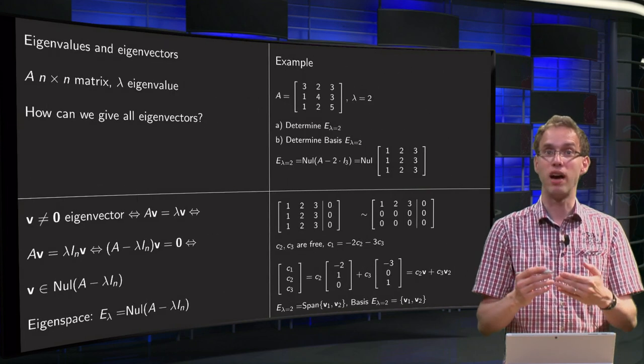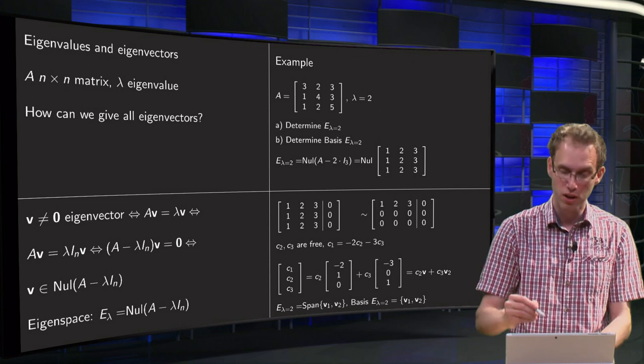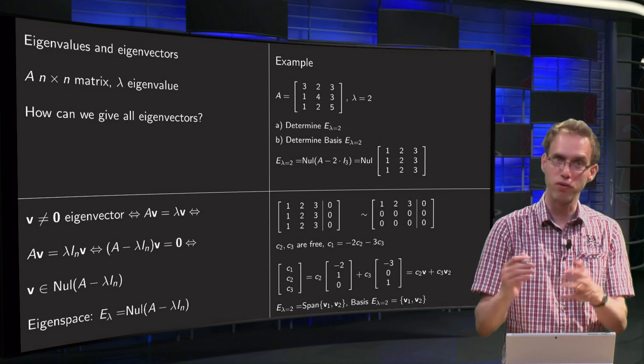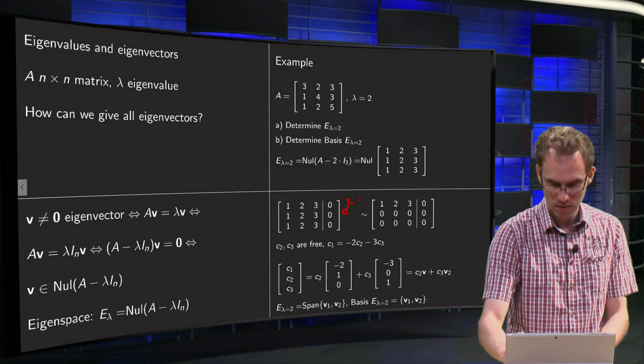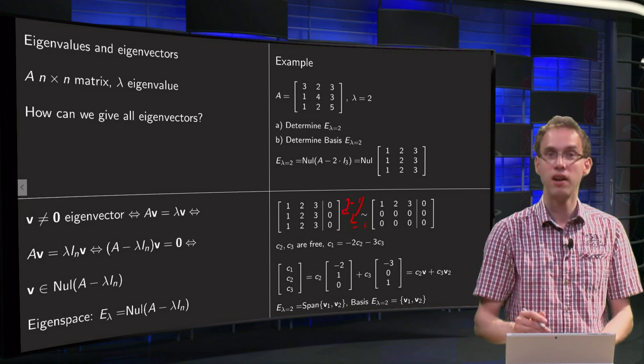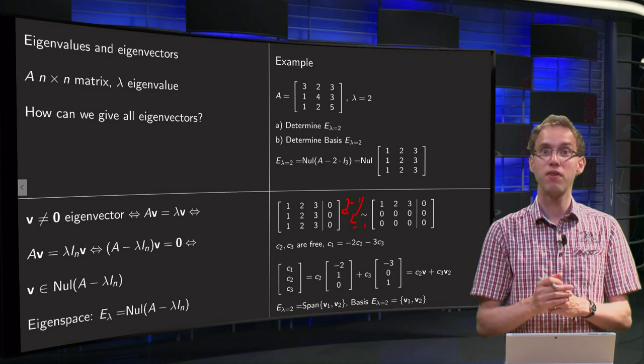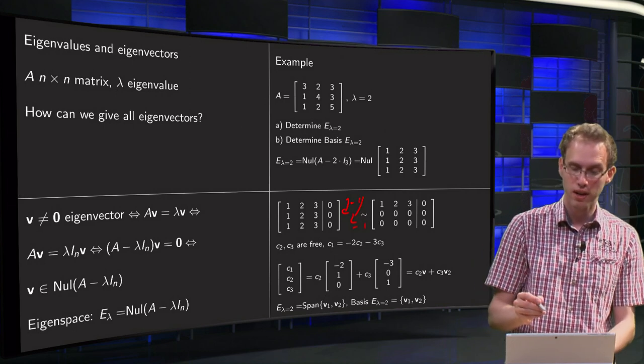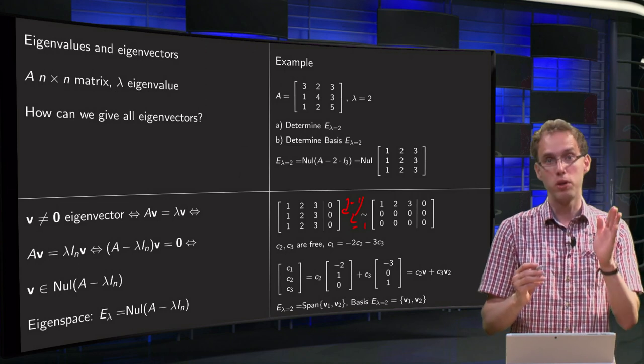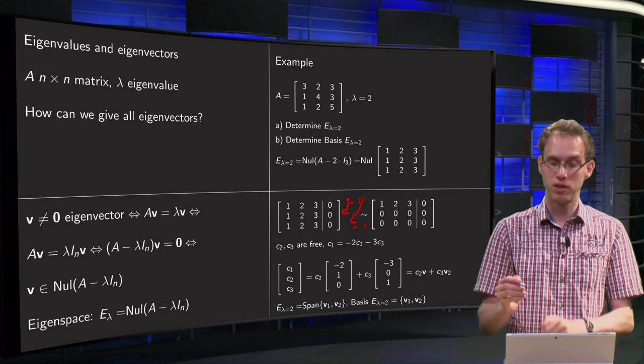So in order to find the null space we have to augment it with zeros and row reduction and solve the system. So we add zeros, we subtract, we subtract. Row reduction goes really fast. We see that we have two free variables, for example C2 and C3, and then we know C1 plus 2 times C2 plus 3 times C3 equals 0.